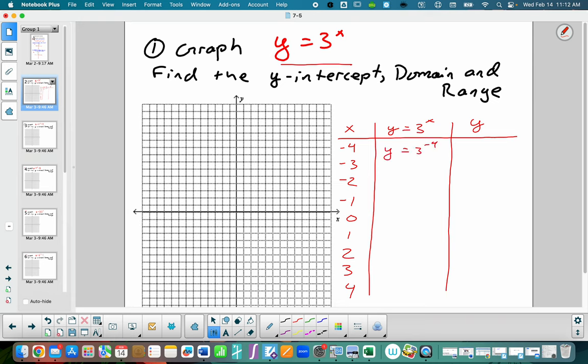So 3 to the negative 4, 3 to the negative 3rd, 3 to the negative 2nd, 3 to the negative 1st, 3 to the 0, 3 to the 1st, 3 to the 2nd, 3 to the 3rd, and 3 to the 4th. And then all I'm going to do is just grab a calculator and evaluate these out.